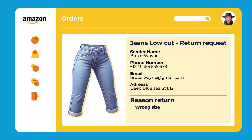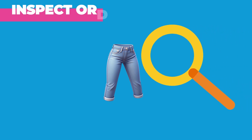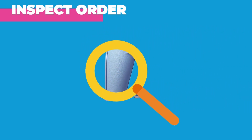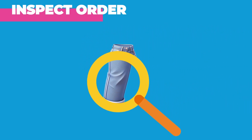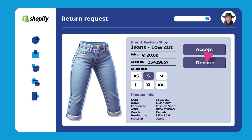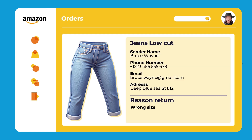In our case, your customer simply ordered the wrong size jeans and sent back the order very timely. So once you have received the jeans and made sure that they are still in new condition, you can approve the return request on your webshop and we will pick up this status change and update the return request on Amazon.